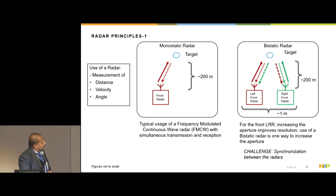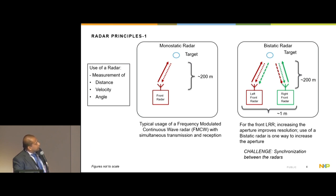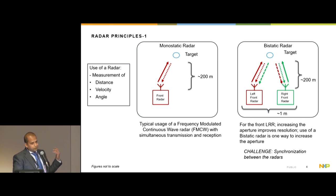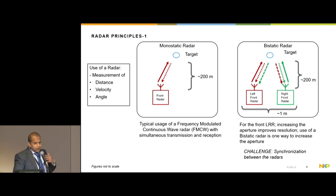What you see in this slide is a standard representation of a radar — you send a wave and get a reflected wave back. On the left is a single radar, referred to as a monostatic radar, and on the right is a bistatic radar. The radar is typically used for distance, velocity, and azimuth or elevation. In this discussion, what is most relevant is distance and velocity.